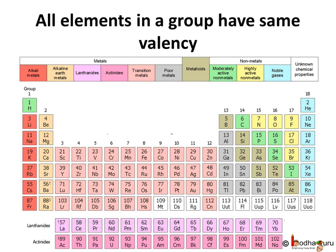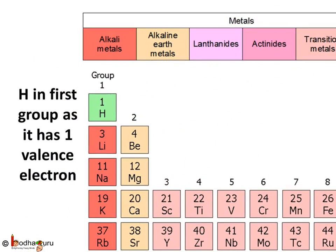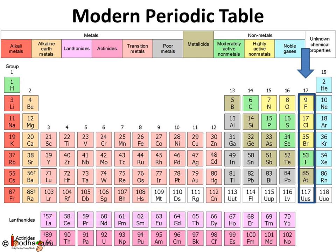Thus group 1, consisting of hydrogen and alkali metals, have one valence electron, and group 2, consisting of alkaline earth metals, have two valence electrons. Talking about hydrogen, the anomalous position of hydrogen remains a problem as it can go to period 1 or period 17. But as hydrogen has only one valence electron, it has been placed in group 1.